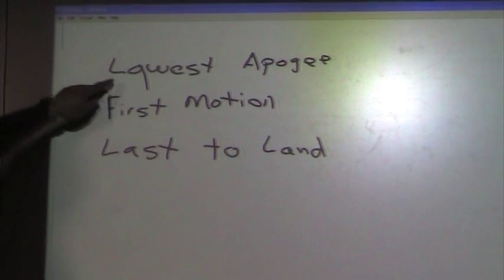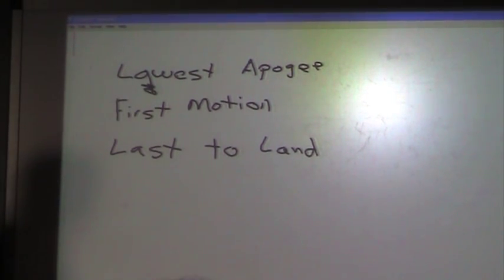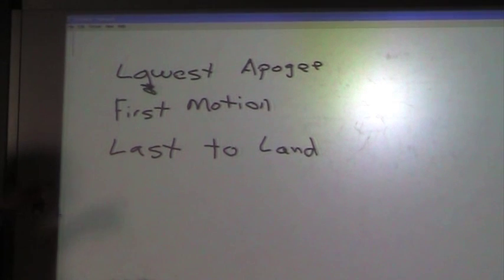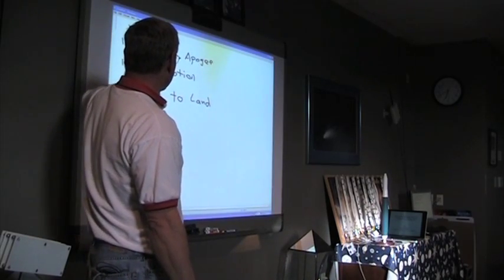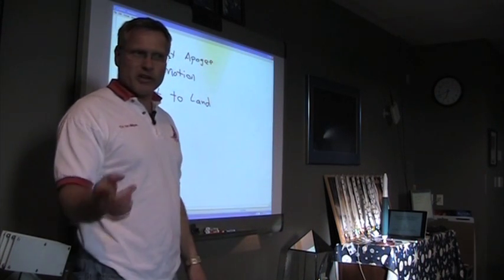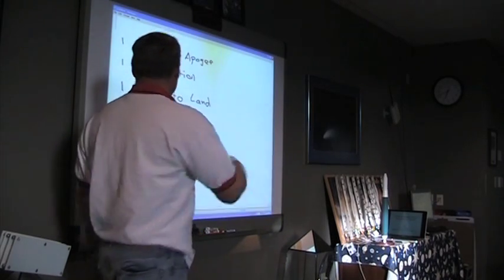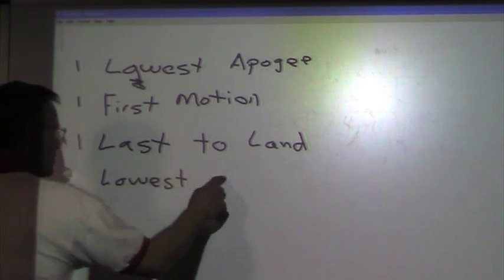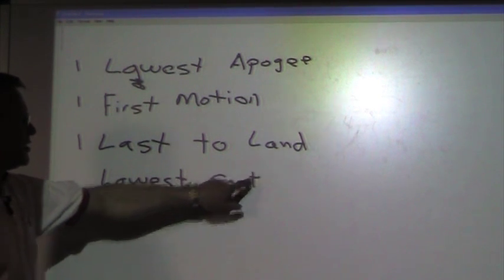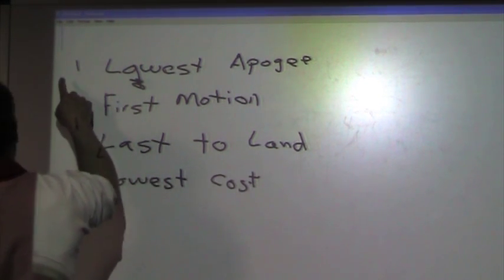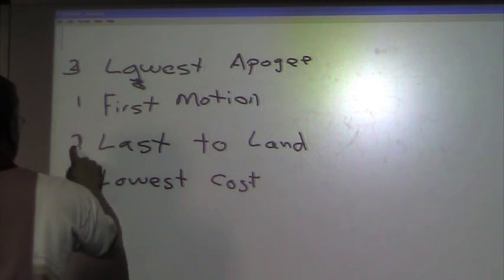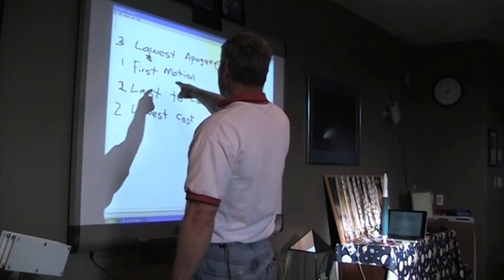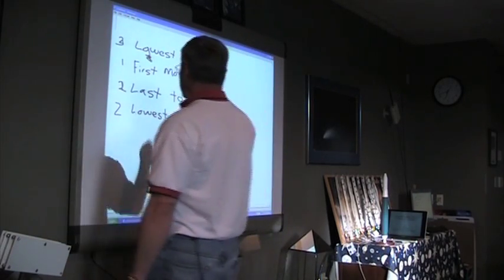Okay, so you get one point for the lowest apogee, one point for first motion, and one point for the last rocket to land. Is there any other criteria? Lowest cost. You get the points a little differently. We went three for lowest apogee, two for last landing, one for motion, and two for the lowest cost.